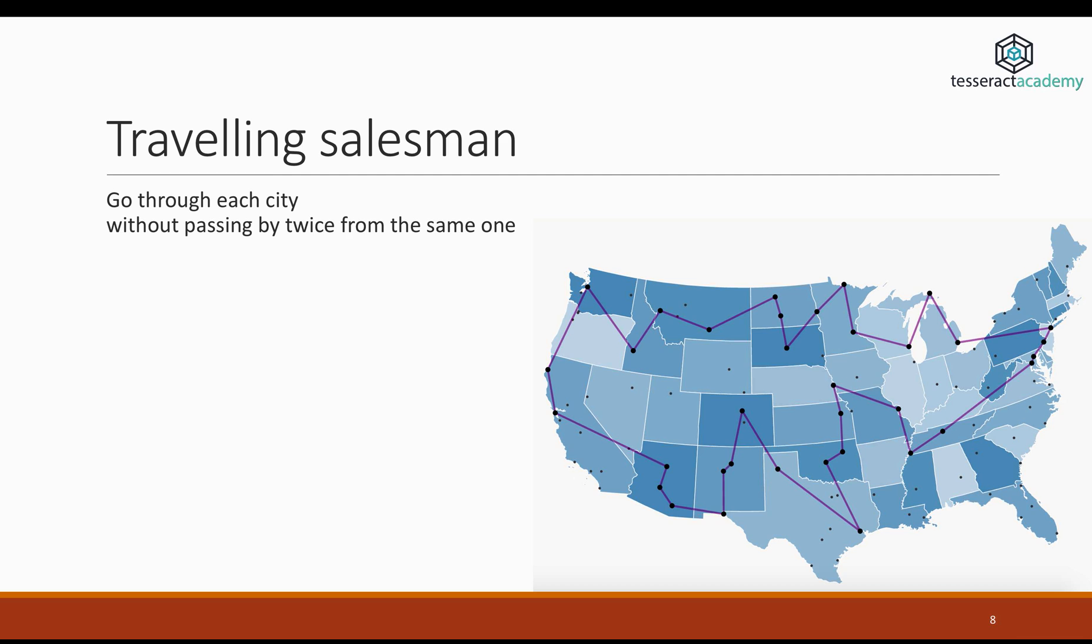The traveling salesman problem is one of the most famous problems, maybe the most famous problem in optimization. So you are, let's say, a salesman that goes across the country, let's say the United States, and you need to visit all the cities in a catalog but without going through the same city twice. And at the same time, you also need to optimize your time. So you need to do this as fast as possible or the distance.